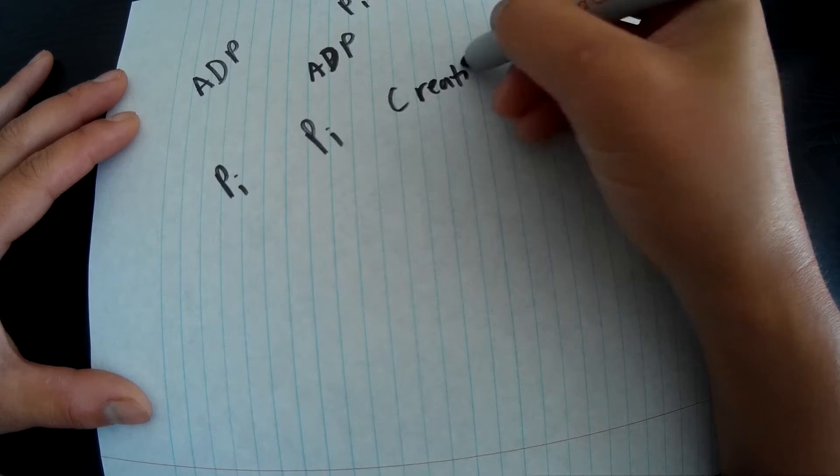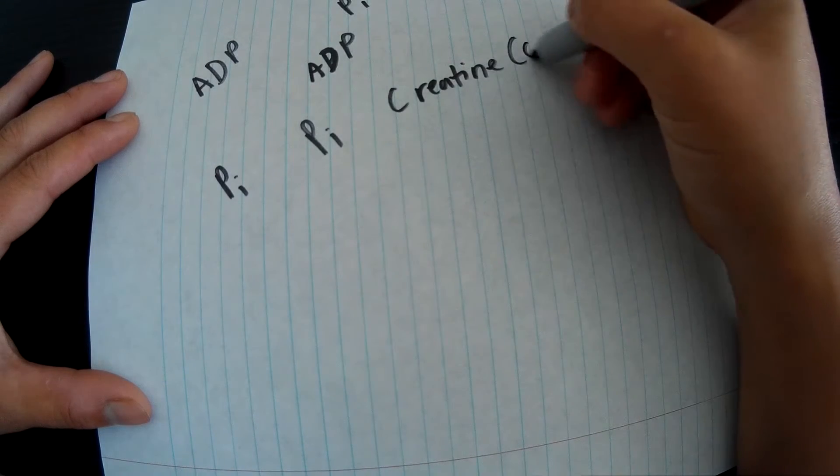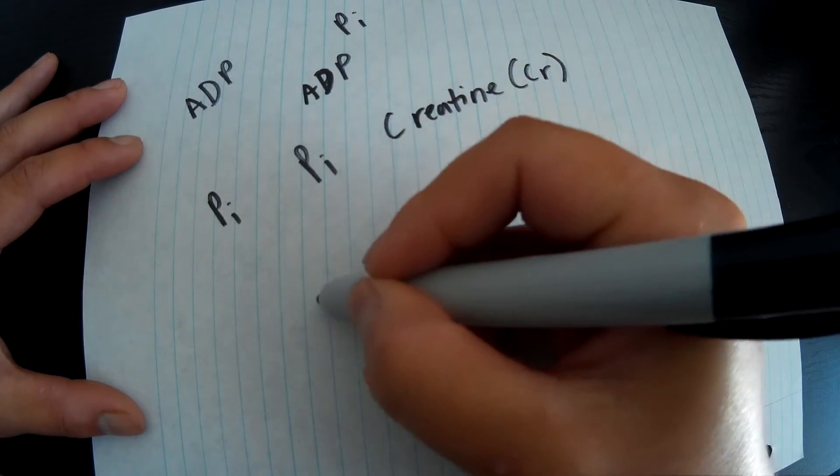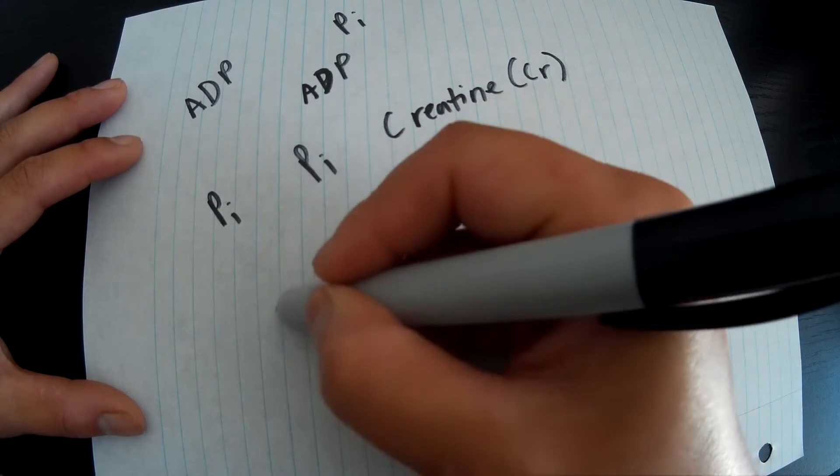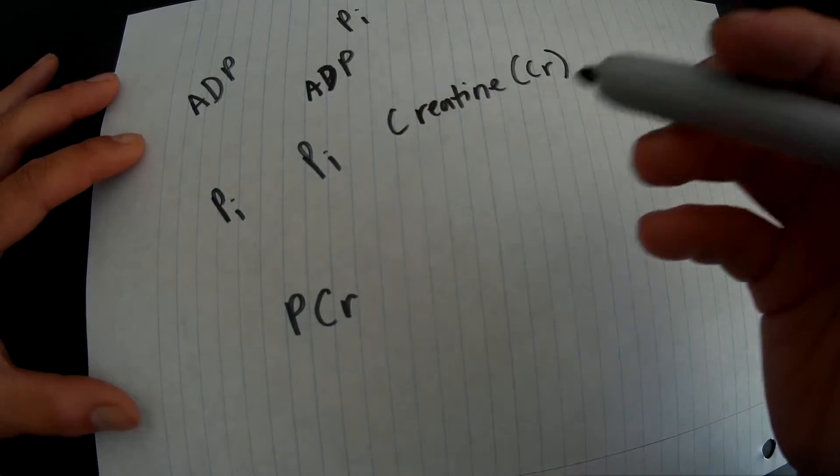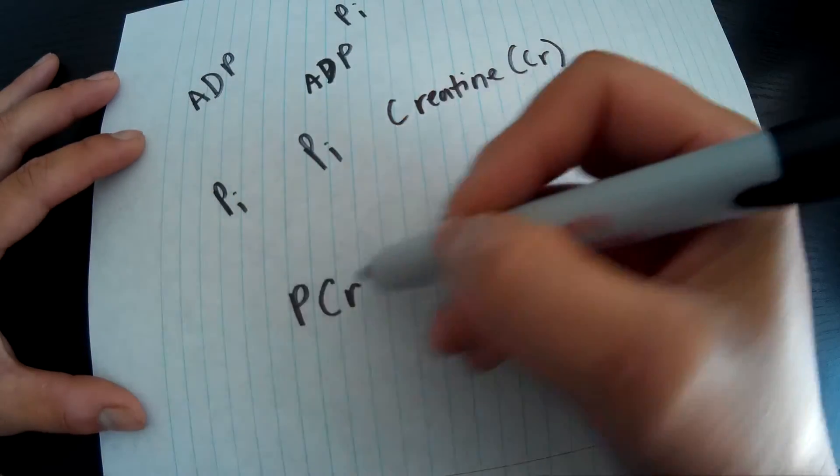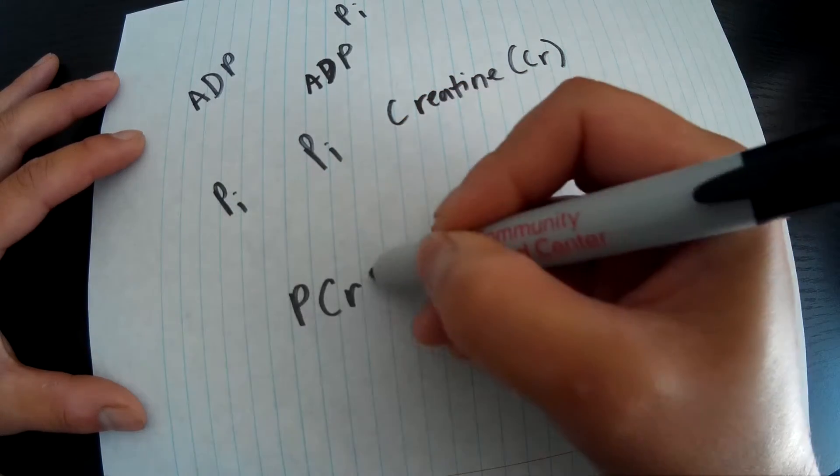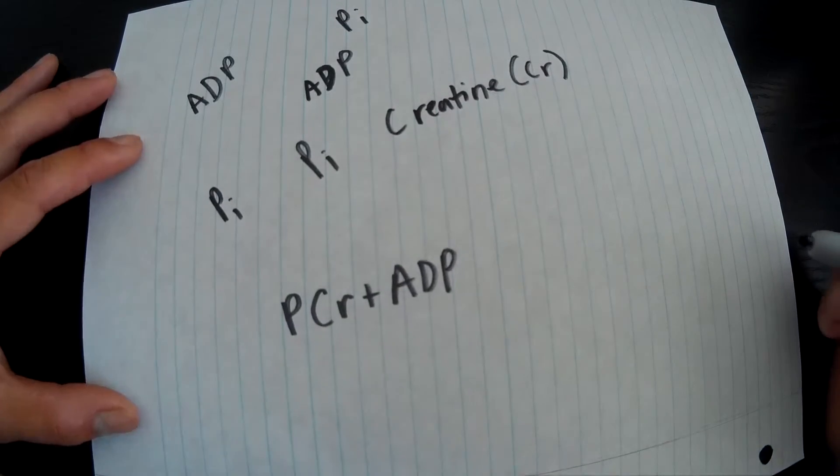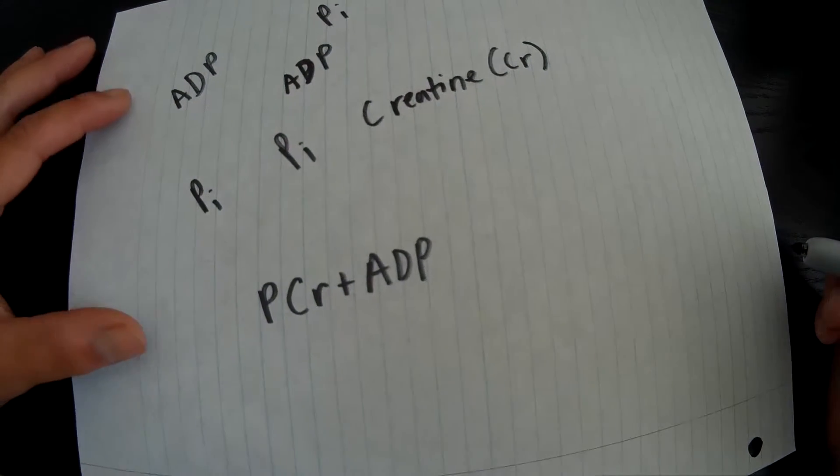We also have creatine here, which is a game changer. Creatine will partner up with phosphate to make phosphocreatine or creatine phosphate, and it will go along with ADP adenosine diphosphate. With the help of creatine kinase, this will turn into ATP or adenosine triphosphate.